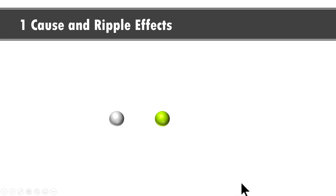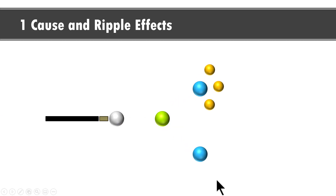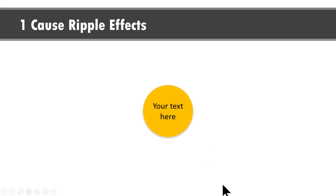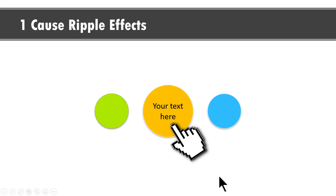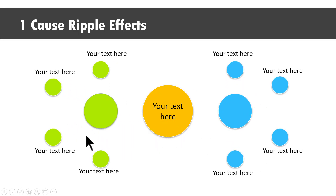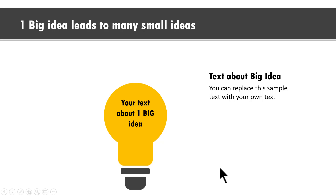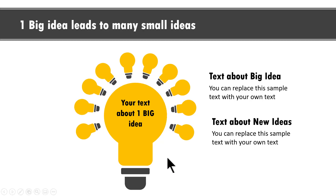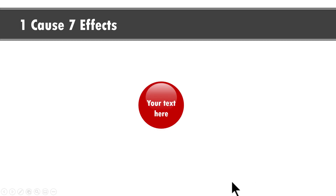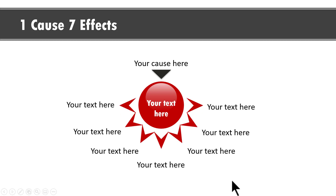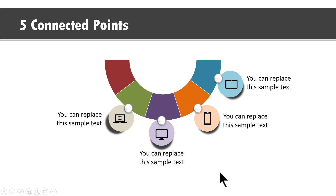Let me show you some variations of this animation from our advanced animation templates bundle, available on the Presentation Process website right now — I'll leave a link in the description below. The first example shows one cause and ripple effects, inspired by a pool table — one trigger and things expand outward. Another example has a hand clicking the center, causing the next level and the next. Once you have the base idea, you can create interesting options like one big idea leading to many small ideas, or one cause leading to seven effects. You can also use five connected points where each point has an associated icon.